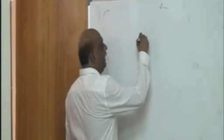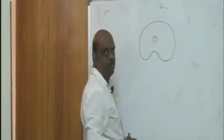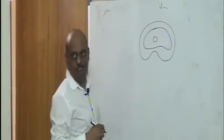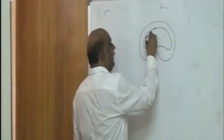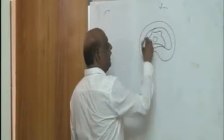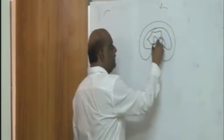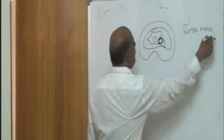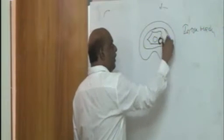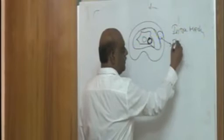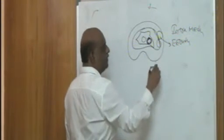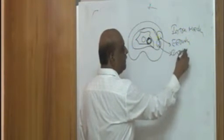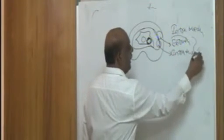Looking at the spinal cord, there is a central canal. You have the dura, and inside is what is called the medulla. Tumors arising from the medulla are called intramedullary. Outside the dura is extradural; inside the dura but outside the medulla is intradural extramedullary. These two locations belong to the extramedullary category.